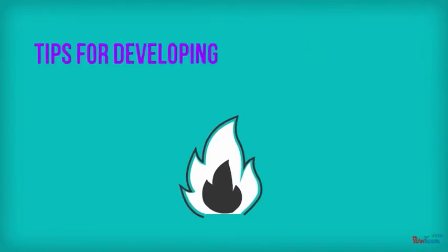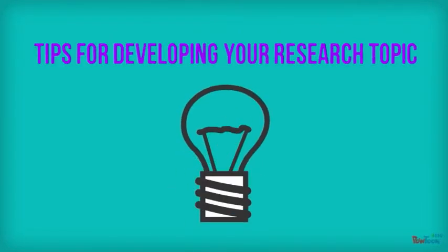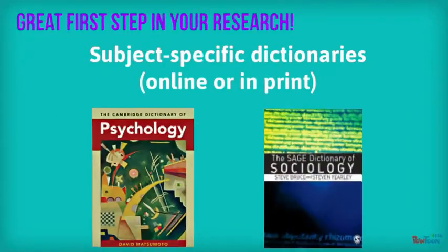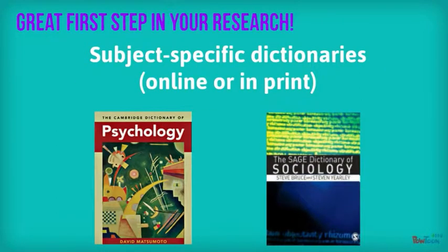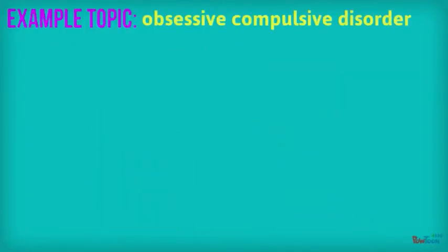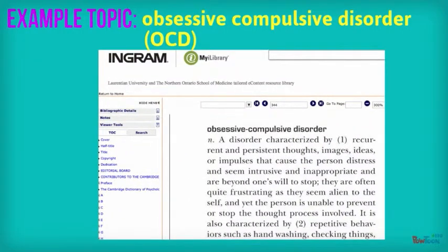A great first step for your research is to confirm your understanding of your broad topic idea by checking the definition in a dictionary. The library has many subject-specific dictionaries, online or in print. These dictionaries focus on the vocabulary of a particular discipline. For example, if you're a psychology student and your topic is obsessive-compulsive disorder, also known as OCD.